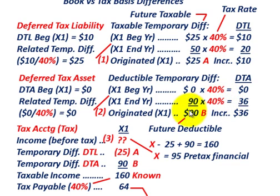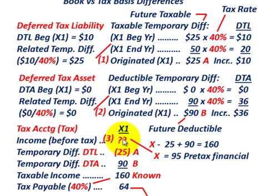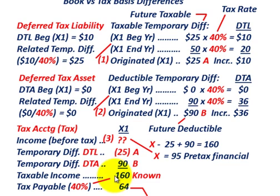Now we've determined what we originated for the year for a deferred tax liability and a deferred tax asset. We can now figure our pre-tax financial income — the reconciliation of our taxable income with our pre-tax income. Our taxable income, which is given, is $160,000.